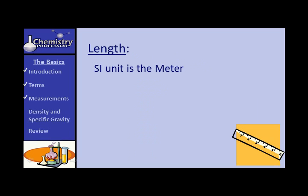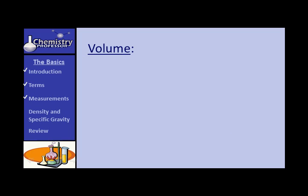Length: the international system unit for length is the meter. You should know that 2.54 centimeters is exactly equal to one inch — as many zeros as you want to put past that, because it is an absolute equality. For volume, the standard unit is the cubic meter. However, a cubic meter is larger than 27 cubic feet, which gets unwieldy in chemistry. So we commonly use the cubic centimeter, which is exactly equal to a milliliter. If you look at older references, you may notice that a cubic centimeter and a milliliter were not the same.